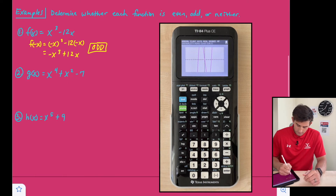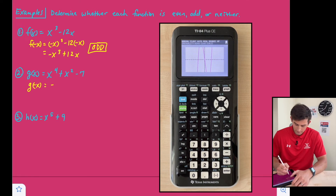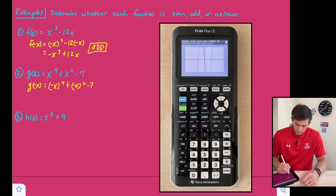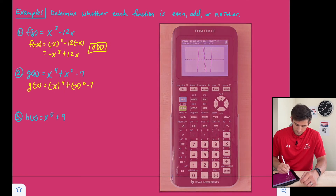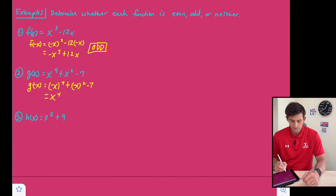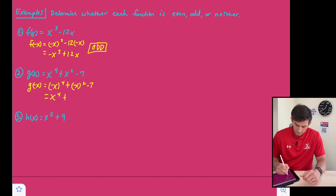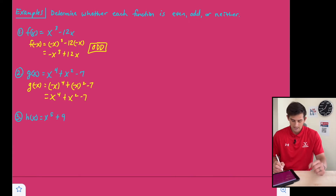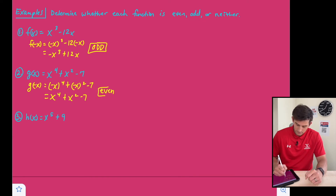Number two: let's find g of negative x. So instead of x to the fourth we have negative x to the fourth, plus negative x squared minus seven. Negative x to the fourth power means four factors of negative, giving us back positive x to the fourth. Then negative x times negative x gives us back x squared, and we still have minus seven. Our equation looks exactly as it started, so this is an example of an even function.